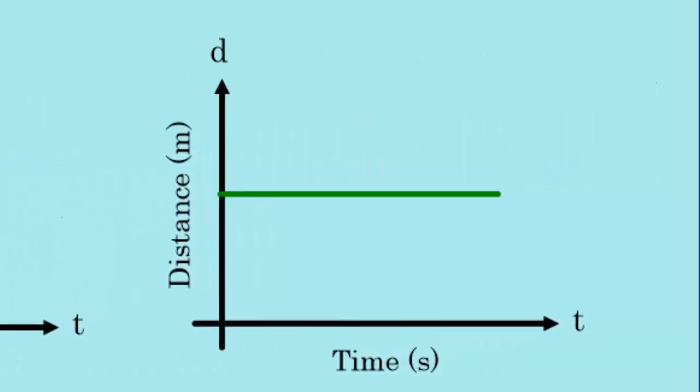Our green relationship has a flat line. For us, the distance isn't changing as time goes on. I guess we can say that whatever we're looking at isn't moving anywhere as the seconds tick by.